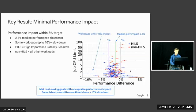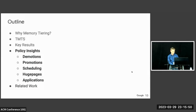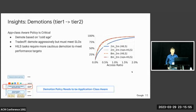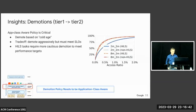On the demotion side — migrating from tier one into tier two — making the demotion policy aware of application class was really critical. We demote based on cold age, where a page in tier one must be untouched for a certain length of time before being demoted. We found that hills tasks had a higher population of cold memory, so applying the same demotion policy to both hills and non-hills tasks would demote more hills memory, inverting their priority. We had to apply different demotion ages to both groups to bring the access ratio for hills tasks in line with non-hills.